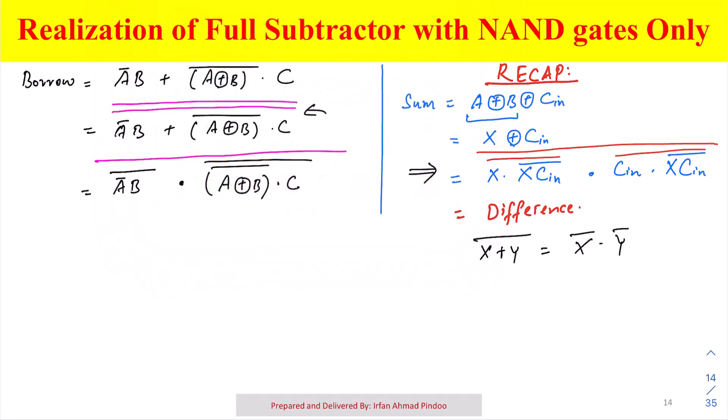Now what we will do? We will write it again as B dot A bar plus B bar dot C into C bar plus A XOR B bar. Now all the bars we will also place here.